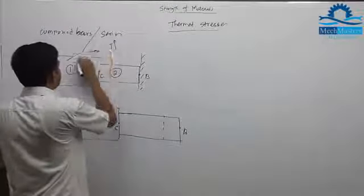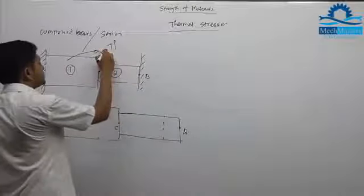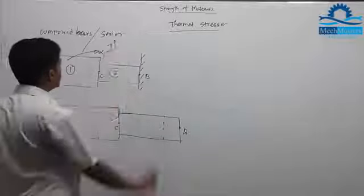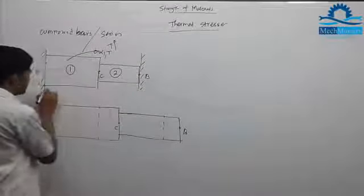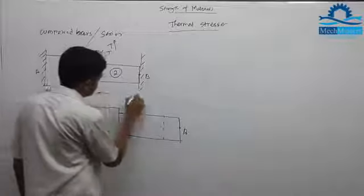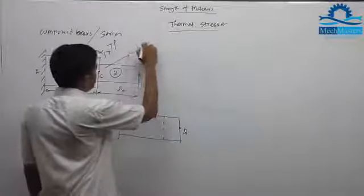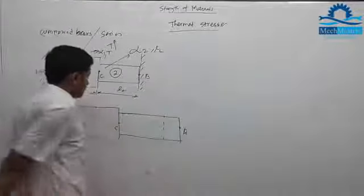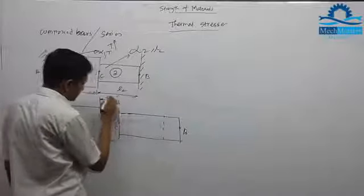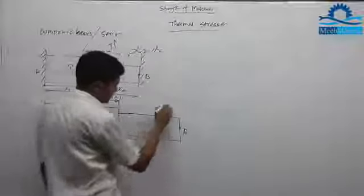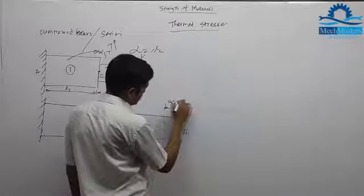Bar 1 has a linear thermal coefficient of expansion alpha 1, initial length L1. Bar 2 has a thermal coefficient of expansion alpha 2 and length L2. The temperature increase is T degrees centigrade. So the thermal expansion of bar 1 is alpha1·T·L1, and the thermal expansion of bar 2 is alpha2·T·L2.